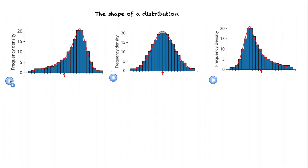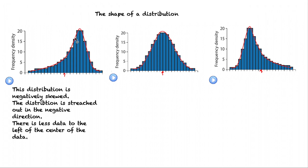Let's look at this first one. This distribution is considered to be negatively skewed. This distribution is stretched out in the negative direction. This is the centre of this scale and we notice that there is less data to the left of that centre mark. That's another characteristic of a negative distribution.